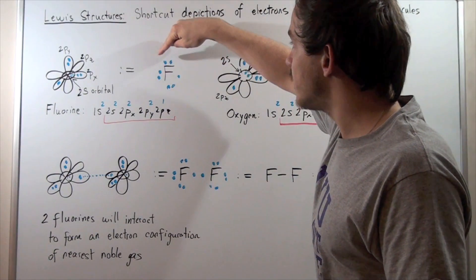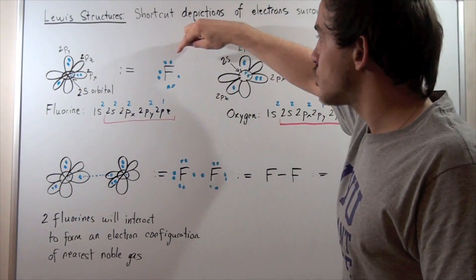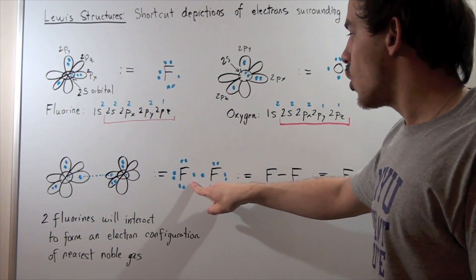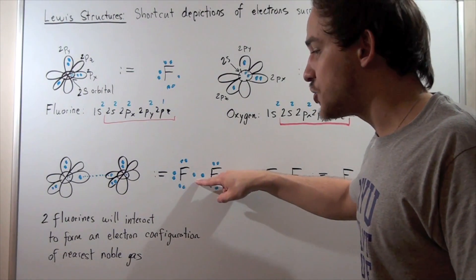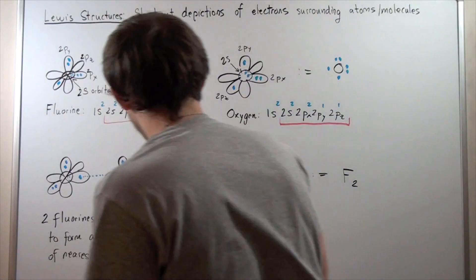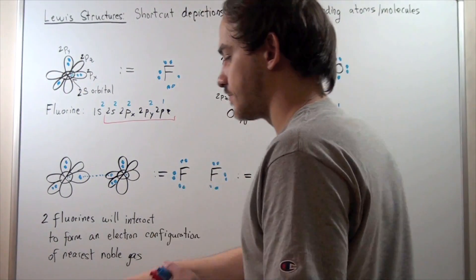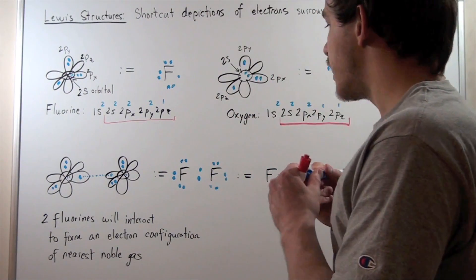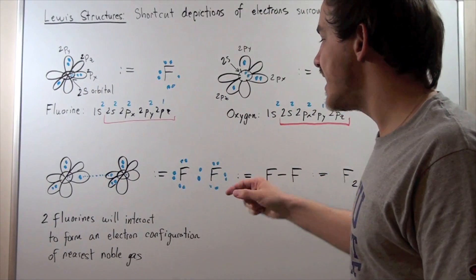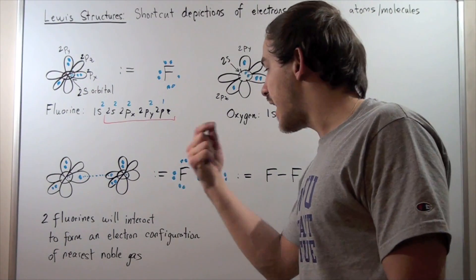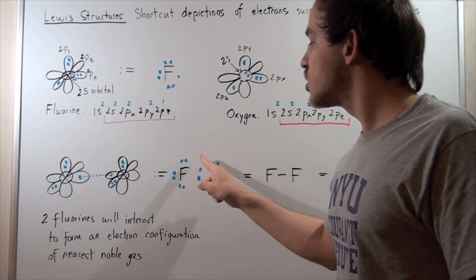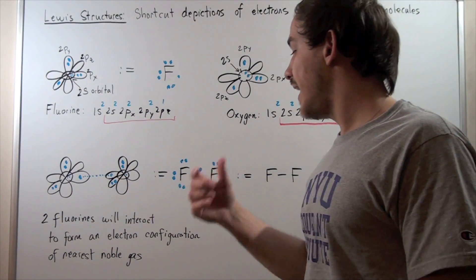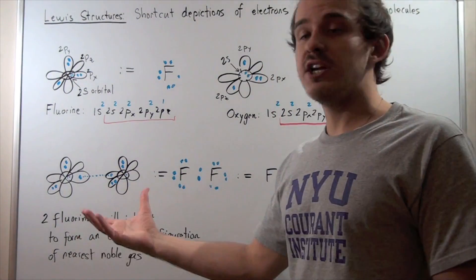This interaction can be depicted using the Lewis structure shortcut for fluorine: 2 electrons here, here, and here representing the 2s, 2px, 2py, and 2pz. We orient them so the single electrons are shared. Redrawing them to show the sharing: each fluorine now has 8 valence electrons plus 2 core 1s electrons, giving each fluorine 10 electrons total — the electron configuration of a noble gas.